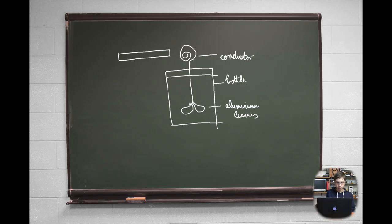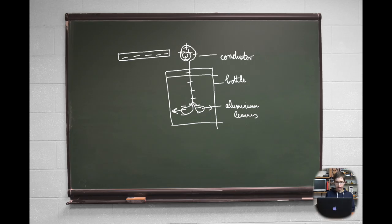The electroscope functions in the following way. If we take, for example, a uniformly negatively charged object, it attracts positive charges — protons — to the top of the conductor, and consequently negative charges — electrons — are repelled to the bottom of the conductor. This causes the aluminum foil leaves to become charged with negative charge, and as a result they repel from each other. The more charge an object has, the more the leaves repel, meaning the angle enclosed by them increases.